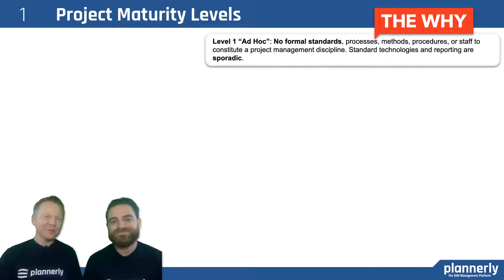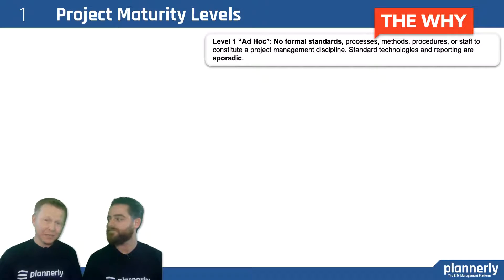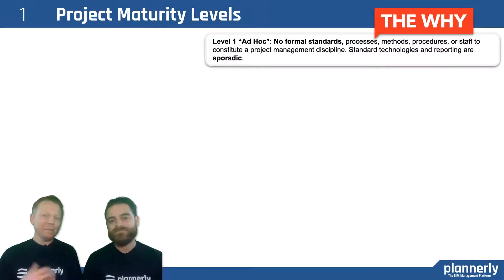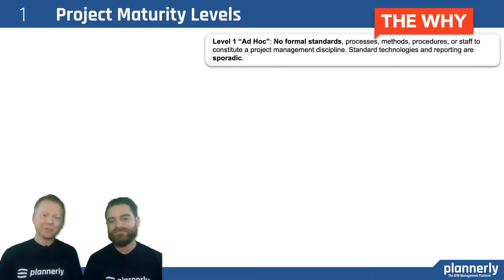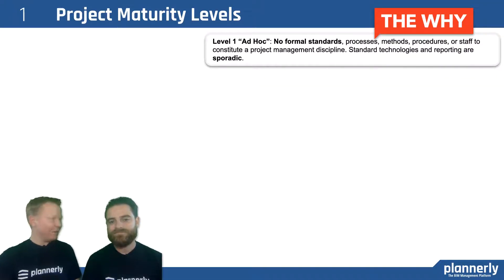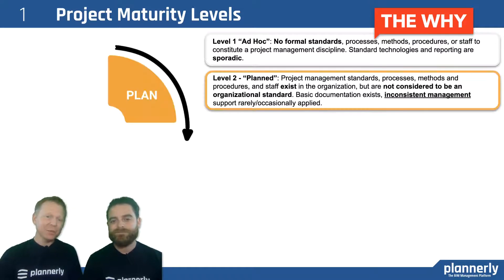So we looked into something called project maturity levels. What we find a lot of the time when we start with just ad hoc, not formal standardized processes and sporadic reporting, is that there's a lot of confusion and a lot of blame. We tie this to the lean philosophy of plan, do, check, and act.